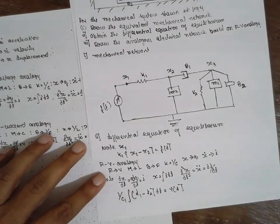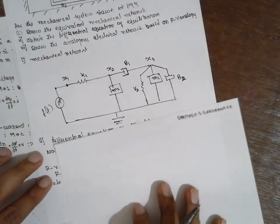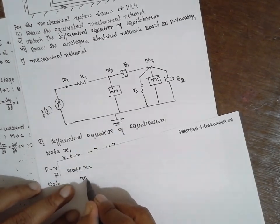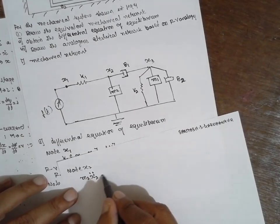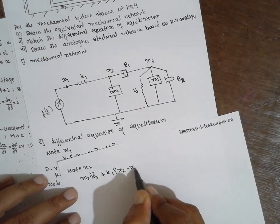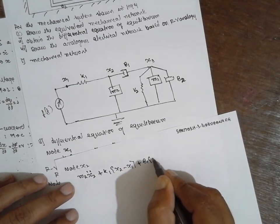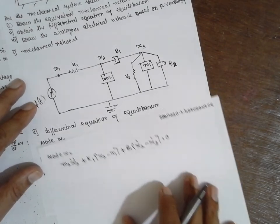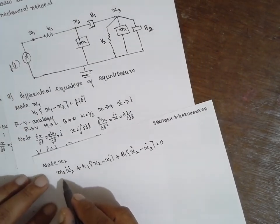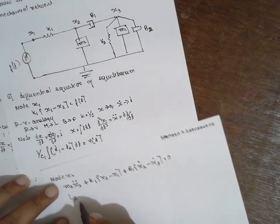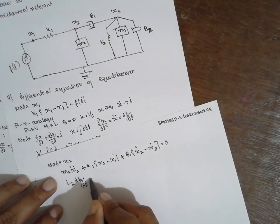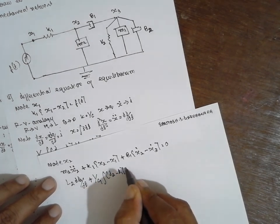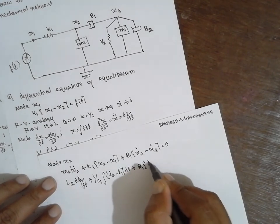Next node 2, for node x2: M2 x2 double dot plus K1 times x2 minus x1 plus B1 times x2 dot minus x3 dot equals 0. Now M2 is nothing but L2 di2 by dt plus 1 by C1 integration of I2 minus I1 dt plus R1 times I2 minus I1 equals 0.